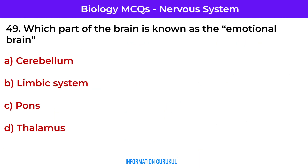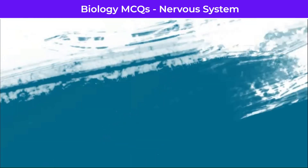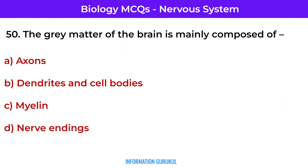Which part of the brain is known as the emotional brain? The limbic system. The grey matter of the brain is mainly composed of dendrites and cell bodies.